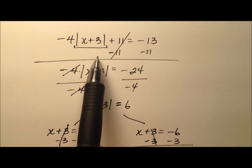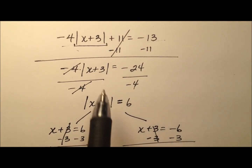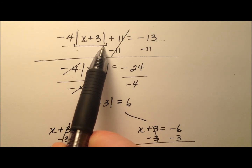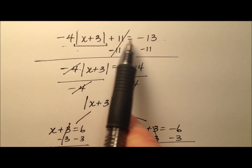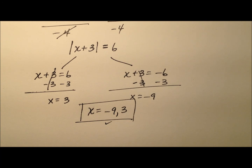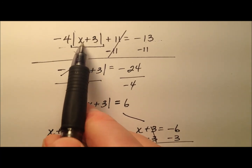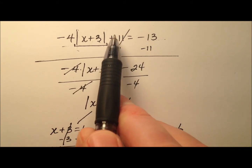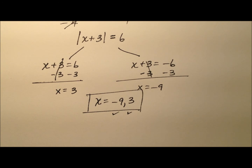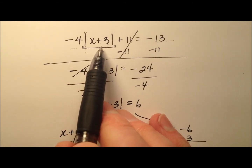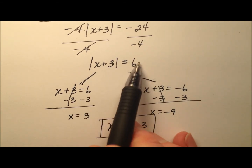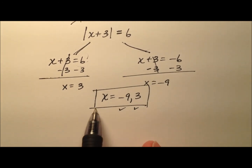I'll plug both values back into the original equation to verify. For negative 9: negative 9 plus 3 is negative 6, and the absolute value of negative 6 is positive 6. Negative 4 times positive 6 is negative 24, plus 11 is negative 13 — so negative 9 works. For 3: 3 plus 3 is 6, the absolute value of 6 is 6, times negative 4 is negative 24, plus 11 is negative 13 — so that one works as well. For this equation, we first isolated the absolute value expression, then split into two equations and solved them independently.